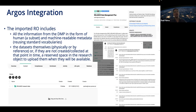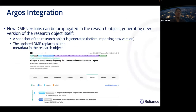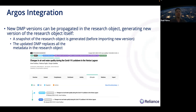That's how it generates the research object. Additionally, when new versions of the DMP are created, they can also be propagated in the research object — a new version of the DMP will create a new version of the research object as well. Basically, what we do is create a snapshot before importing the new version. This is done automatically by the import or update process. A snapshot of the research object is generated before importing the new version, and then all the new information from the new version replaces the existing metadata in the research object. You will also have access to the lifecycle of versions of the DMP via the research object.